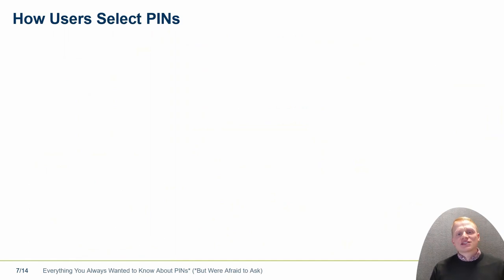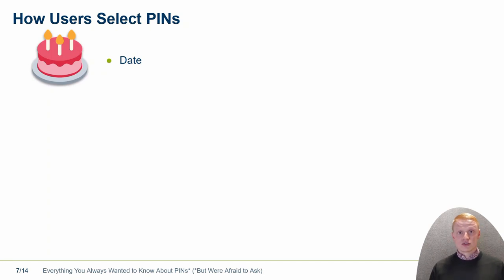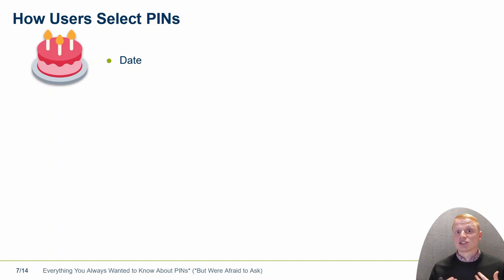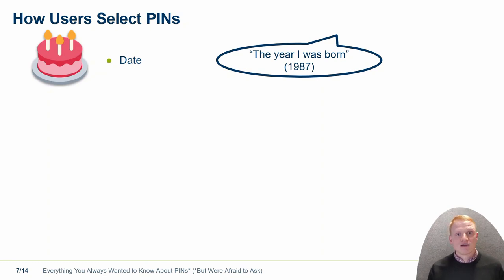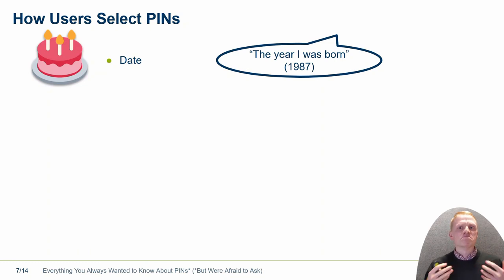The attacker can use that knowledge because users choose their pins based on memorable things like birthdays. With this knowledge, the success rate of the attacker increases up to 8%. Now you may say, how do users select pins in more detail? I just said that dates are something that users base their pins on, and we also saw that in our study. We asked participants to create four and six-digit pins, and we also asked them about the exact strategies they had.